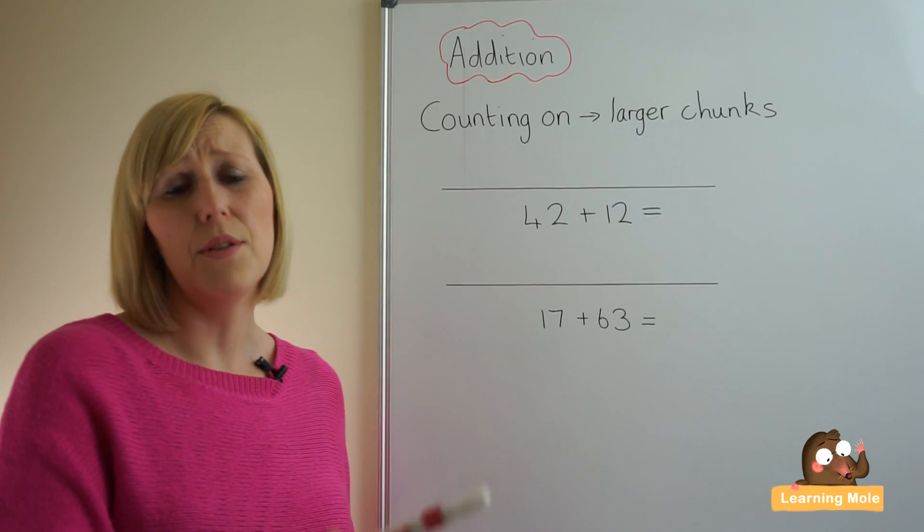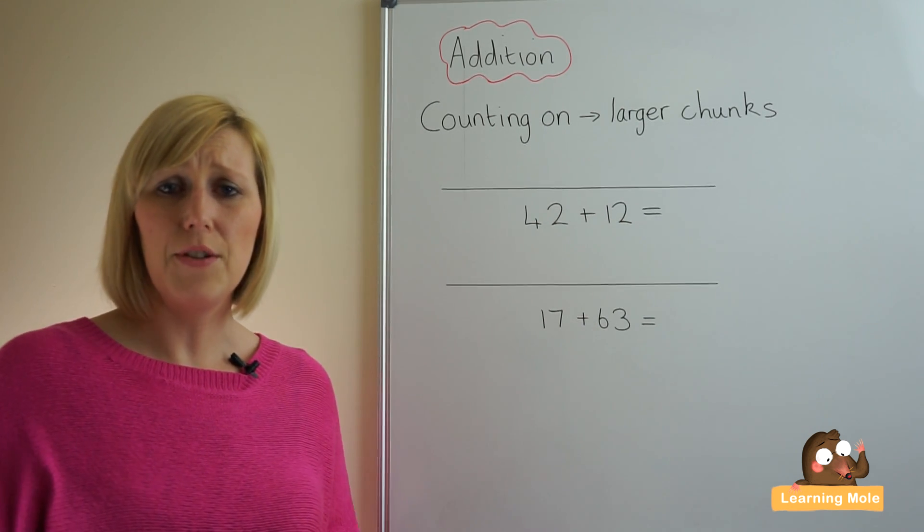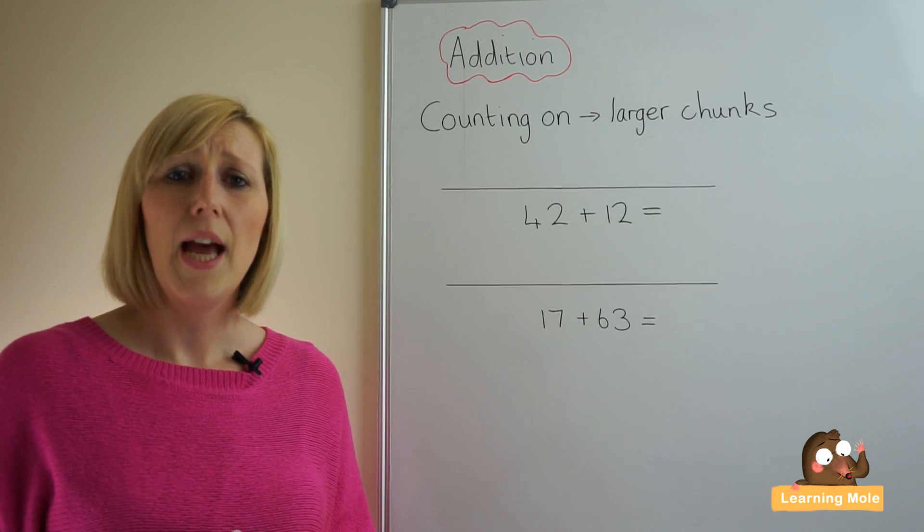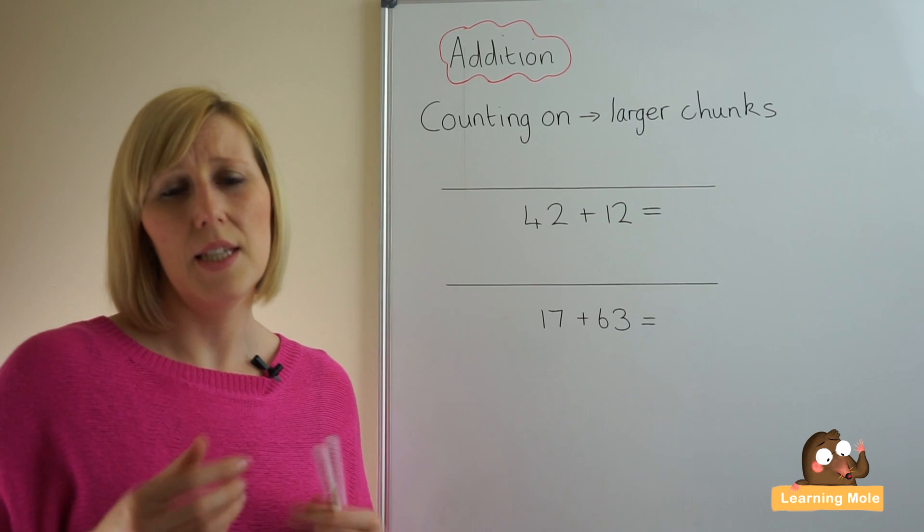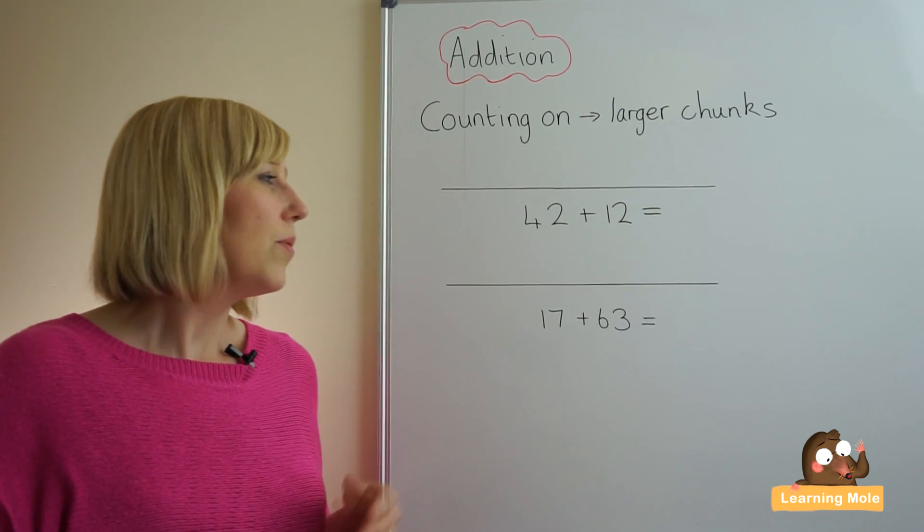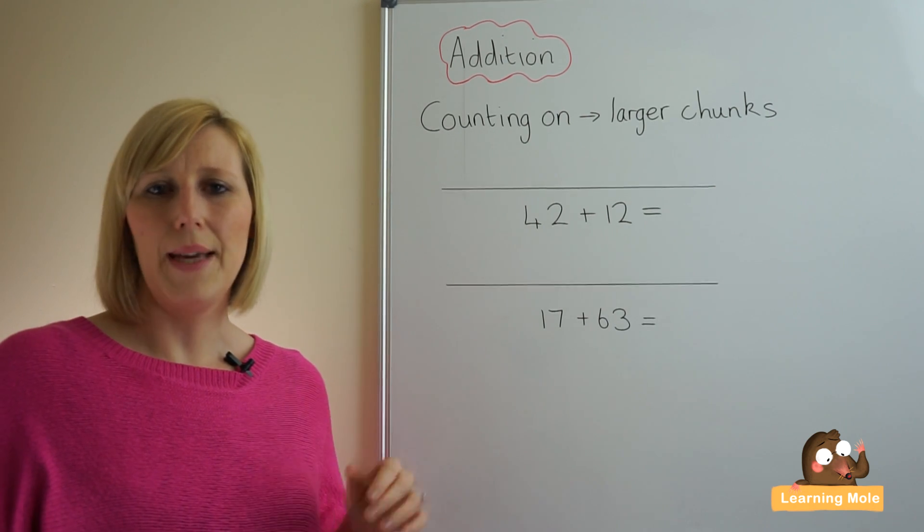If you're counting on in steps of one, that can be a bit confusing. Sometimes children can get very easily distracted or confused and they get mixed up, and this leads to inaccuracies and silly mistakes. So that's why we're going to talk about using bigger chunks.